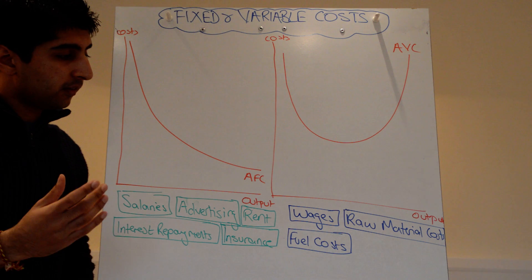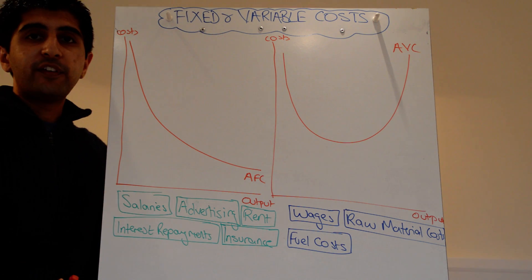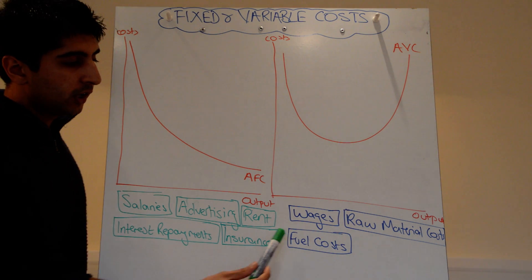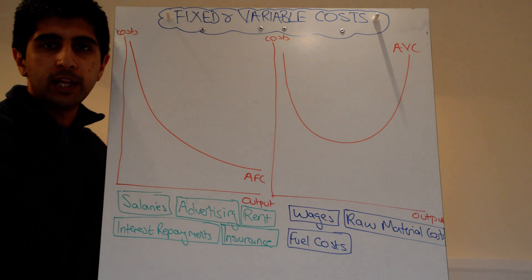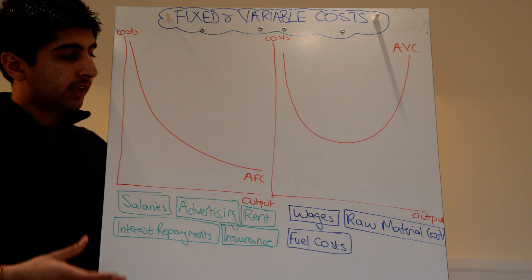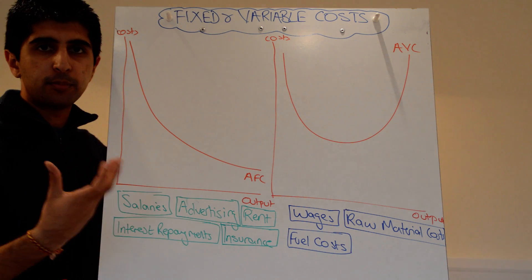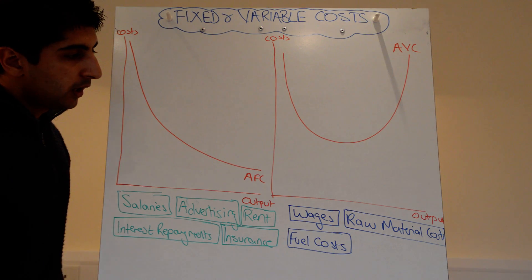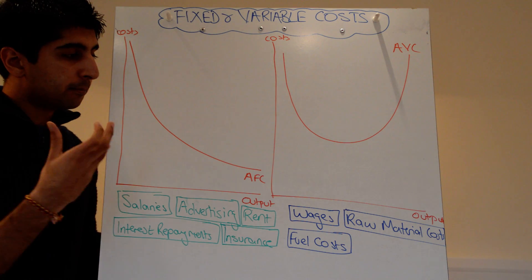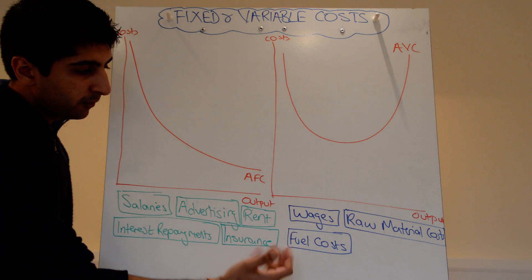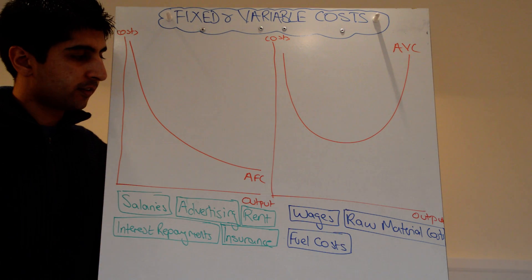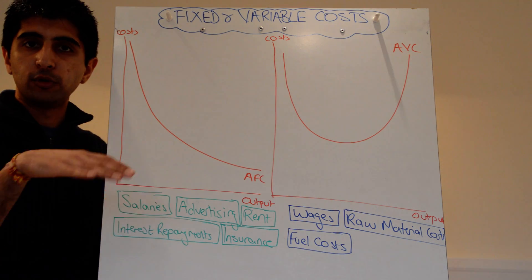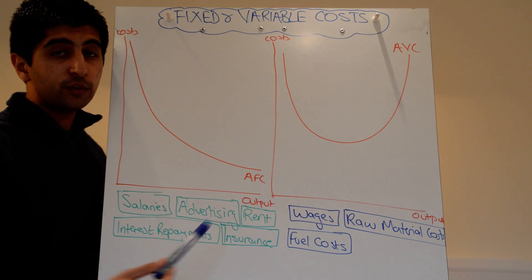Let's look at variable costs. Variable costs are just the opposite of fixed costs — they do vary with output. The wages you pay hourly: you can raise or reduce wages given how much you're producing. Raw material costs similarly — if you're producing more, you'll need more raw materials that will cost more. Fuel costs: as you get bigger as a firm, you'll need to transport your goods more, meaning higher fuel costs, and if producing less, lower fuel costs. Those are all costs that do vary with output.